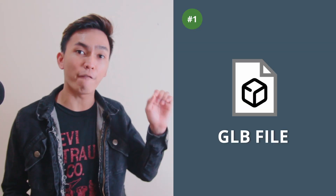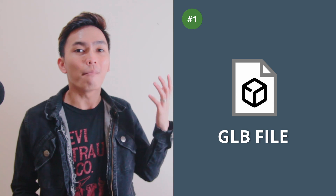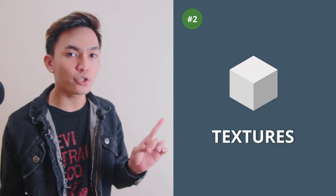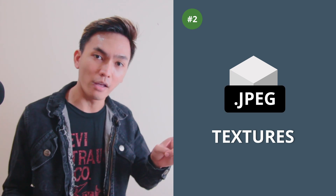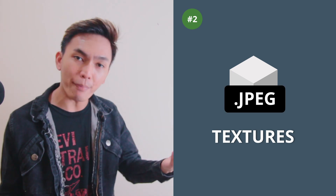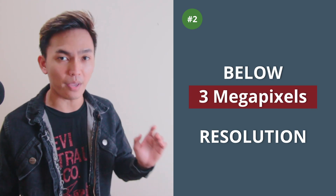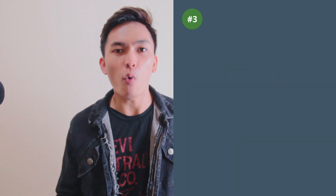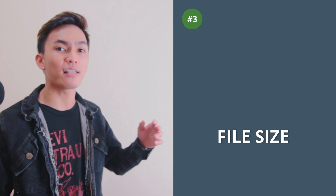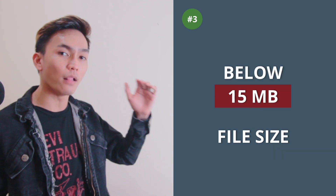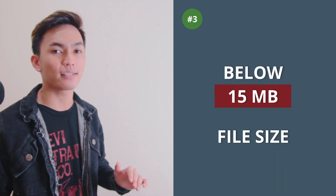If you don't know anything about 3D modeling, you have two options: either hire a 3D artist or buy 3D models online. If you do either of those, make sure you follow the technical requirements. First, it must be a GLB file. Second, the textures must use JPEG format and the resolution must be below 3 megapixels. And the last requirement is the file size — the GLB file must be below 15 megabytes.